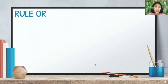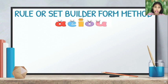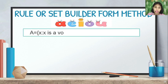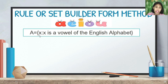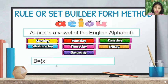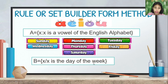The third method is the rule or set builder form. In set builder or rule method, we write: A = {x | x is a vowel of the English alphabet}. The vertical bar is read as 'such that.' So we read this as: 'A is the set of all elements x such that x is a vowel of the English alphabet.' For the days of the week: B = {x | x is a day of the week}.